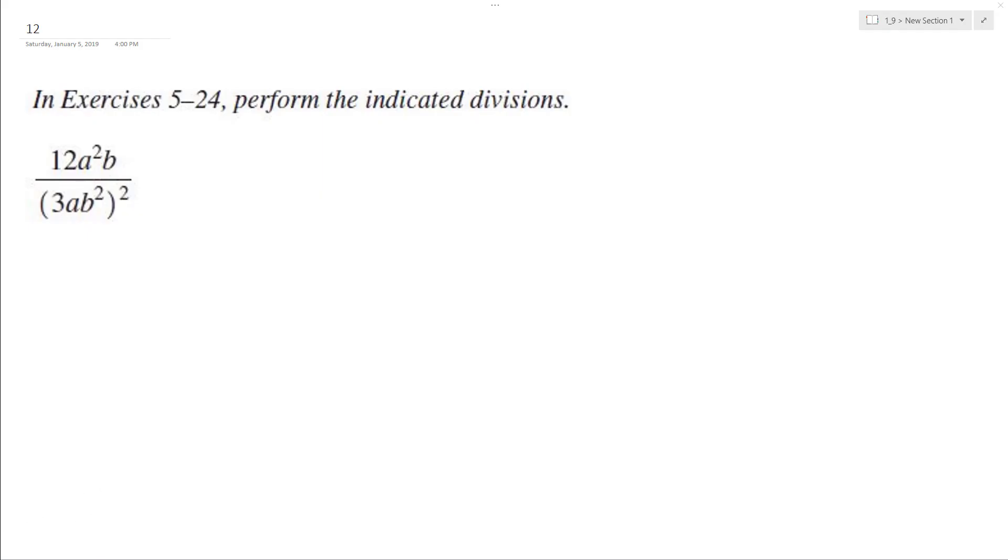All right, let's perform the following operations on this. So on the numerator, what we're going to do is we'll have 12a squared b, and on the bottom, this becomes 3 squared a squared, and then b squared squared is equal to b to the fourth.